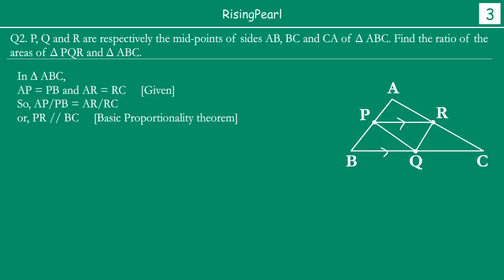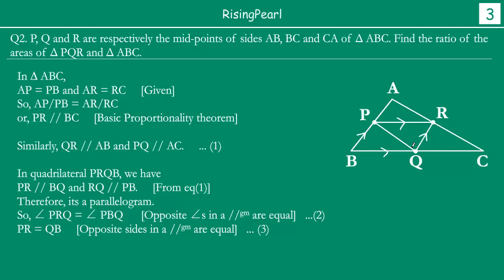Similarly, we can say QR is parallel to AB. Looking at triangle CAB, CR/AR equals CQ/BQ, so line QR is parallel to AB. Now if you look at quadrilateral PRBQ, both pairs of opposite sides are parallel, which means PRBQ is a parallelogram.